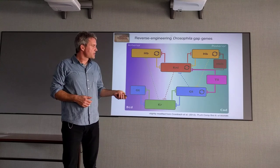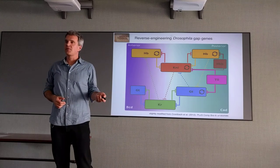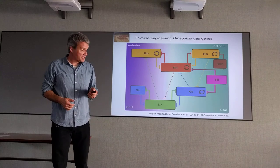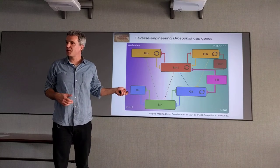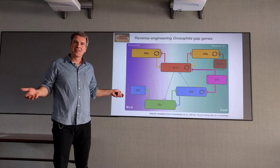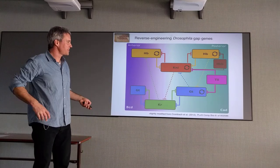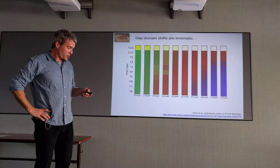The interesting thing about this is that you cannot study this using genetics because there is no mutant that specifically affects this accordion movement of the domains. Because this accordion movement is an emergent property of all the interactions. So the interactions will only produce this effect if a very specific constellation of interactions exists. Without mathematical modeling, you cannot understand this phenomenon.